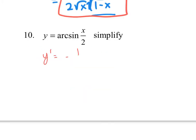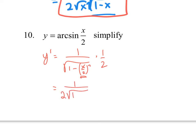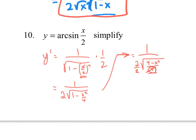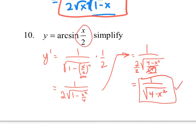Number 10: y prime equals 1 over √(1 minus the thing squared), times the chain, which is 1/2. We can clean this up since we have a compound fraction. This becomes 1 over (2 times √(1 minus x²/4)). We can take √4 outside, and √4 is 2, so we get 2 over 2, simplifying to 1 over √(4 minus x²). When we do antiderivatives later, something clean like this will have an x over 2 in the result.